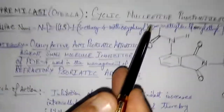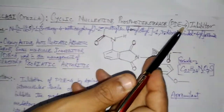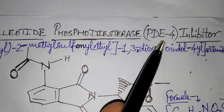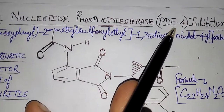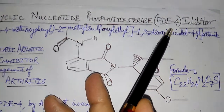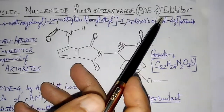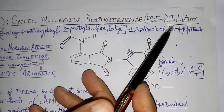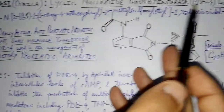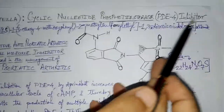Apremilast is a cyclic nucleotide phosphodiesterase, or PDE4, which is an enzyme responsible for the degradation of cyclic AMP in cellular biochemistry. This enzyme is also responsible for the initiation of the inflammatory cascade — the biochemical reactions producing inflammatory agents that lead to inflammation, psoriasis, and psoriatic arthritis. Otezla is primarily a PDE4 enzyme inhibitor.